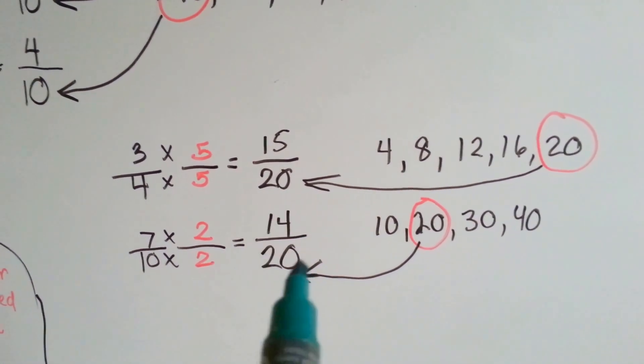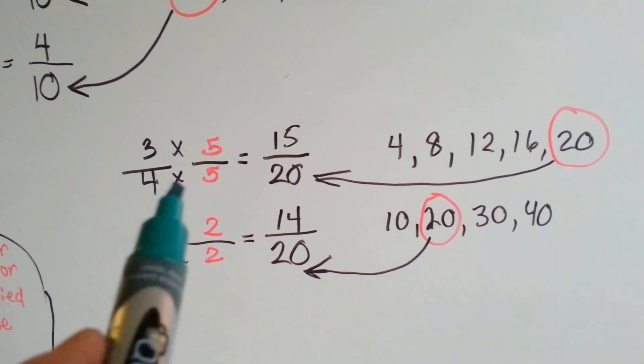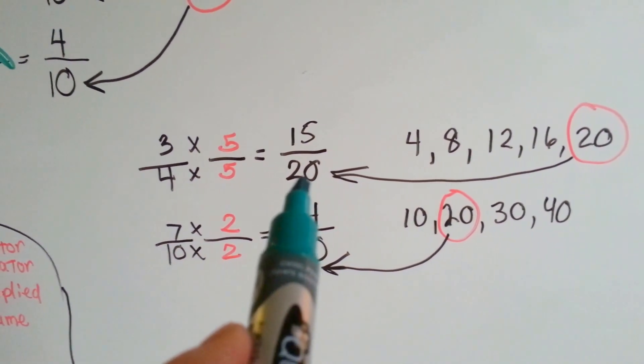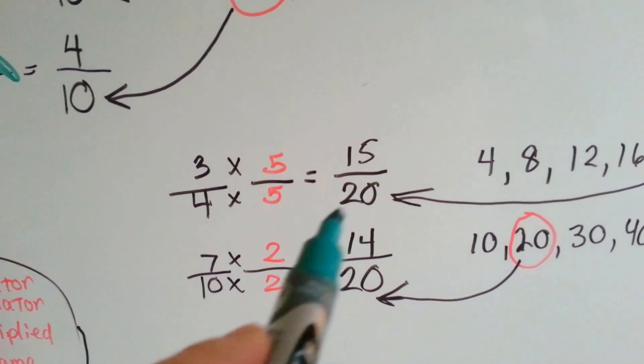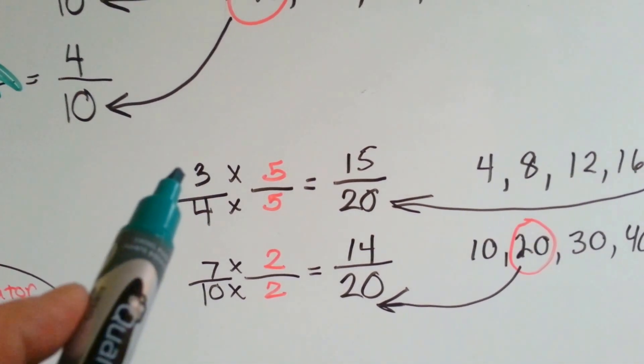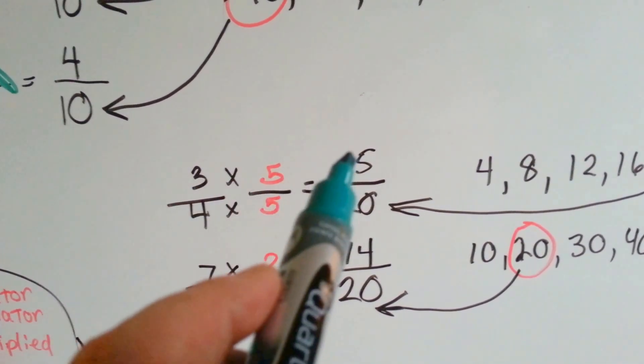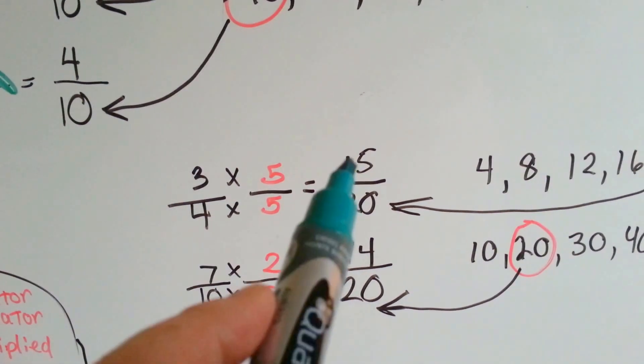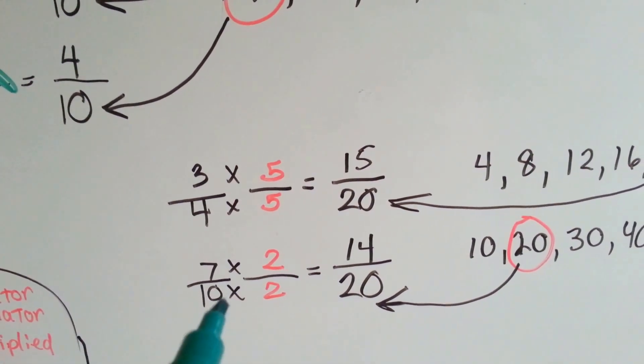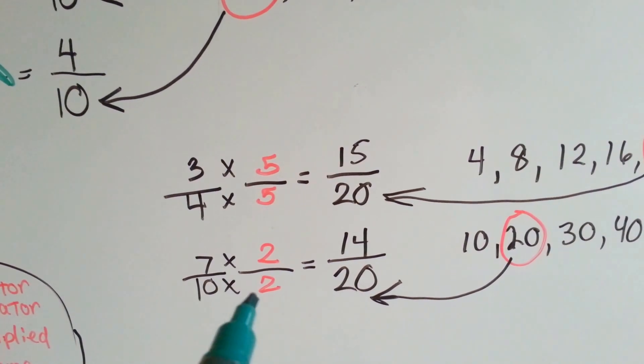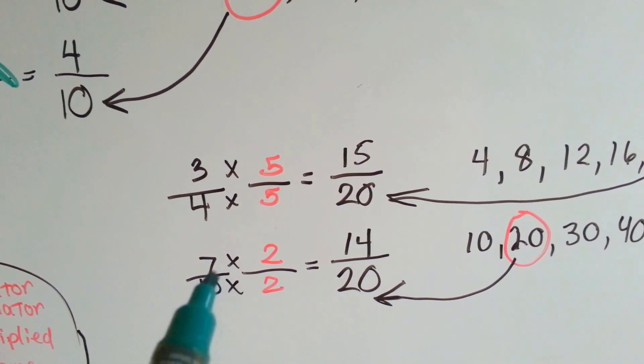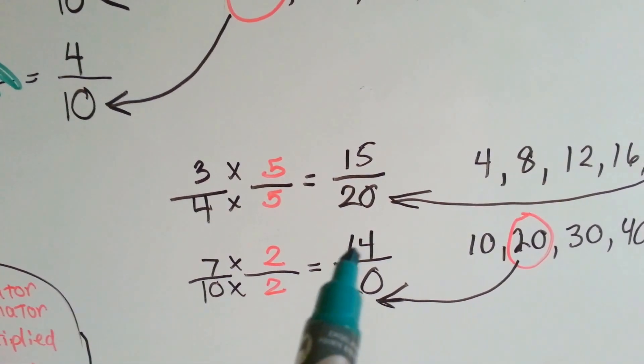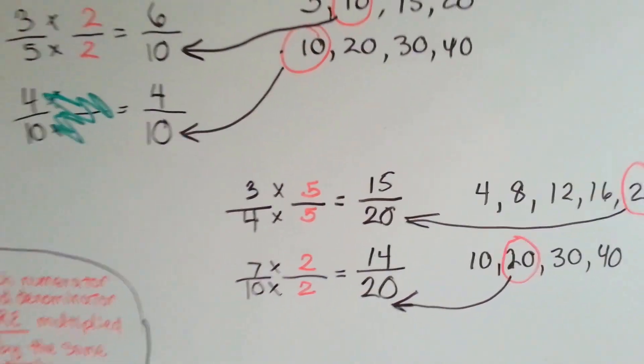We put that here, and we ask, what does 4 need to become a 20 to meet at 20's house? 4 needs to be multiplied by 5. So the numerator wants to be multiplied by 5. 3 times 5 is 15. 3 fourths becomes 15 twentieths. What does 10 need to become a 20? It needs to be multiplied by 2. The numerator gets jealous and wants to be multiplied by 2. So 7 tenths becomes 14 twentieths. See how we did that?